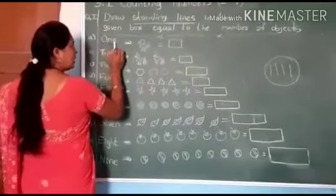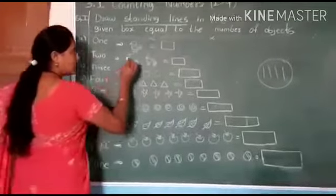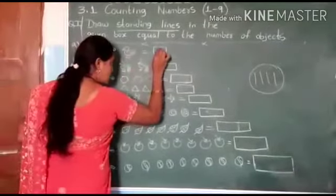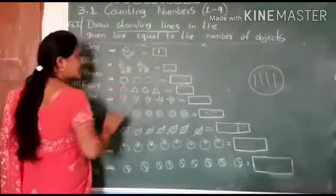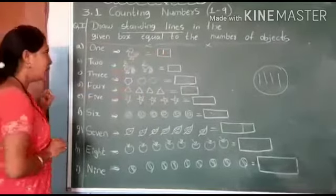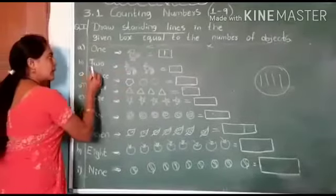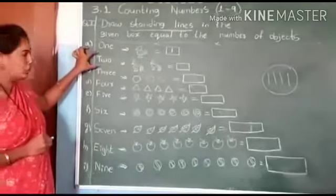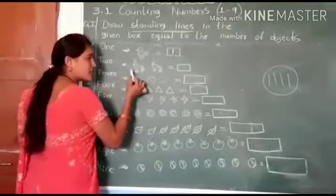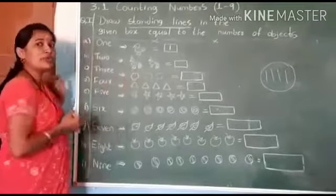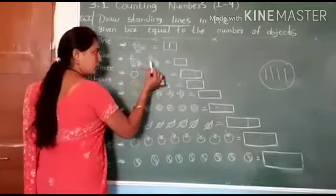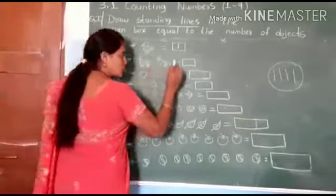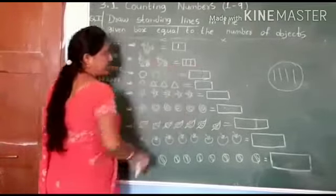First, number one — O-N-E, 1. Here, one object is there, so we should draw here one standing line. The next one, T-W-O, 2. In number 2, how many objects are there children? Count: one, two. So we should draw here two standing lines.